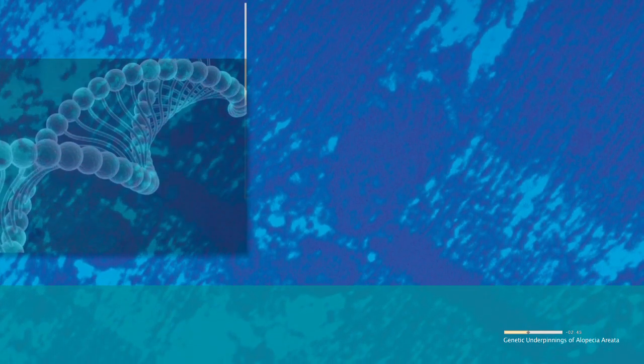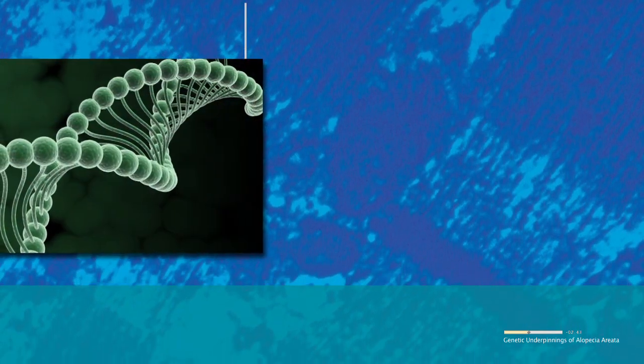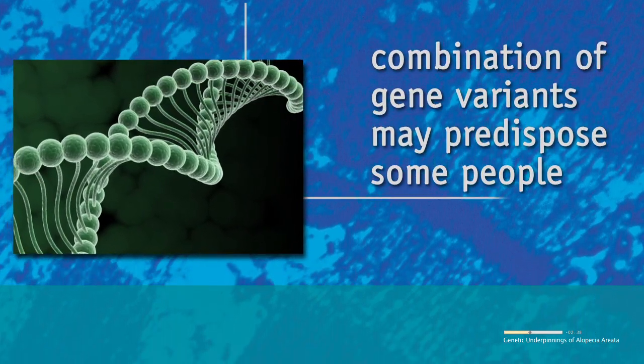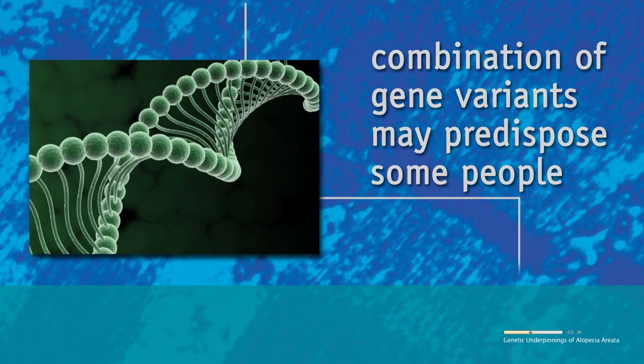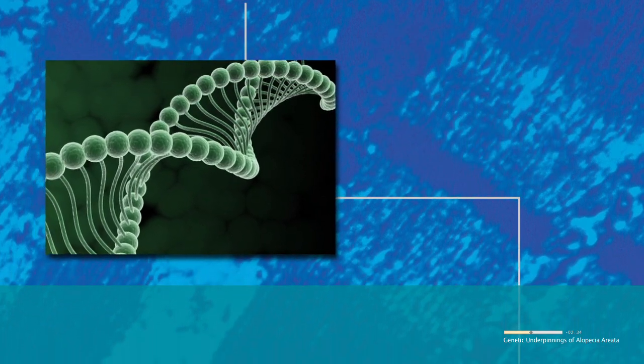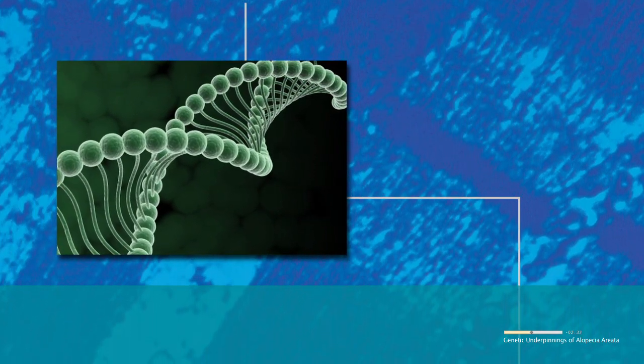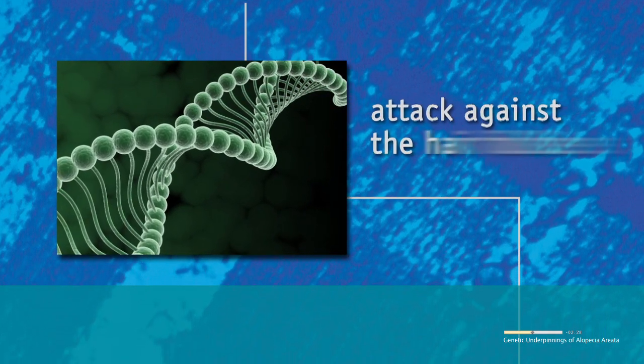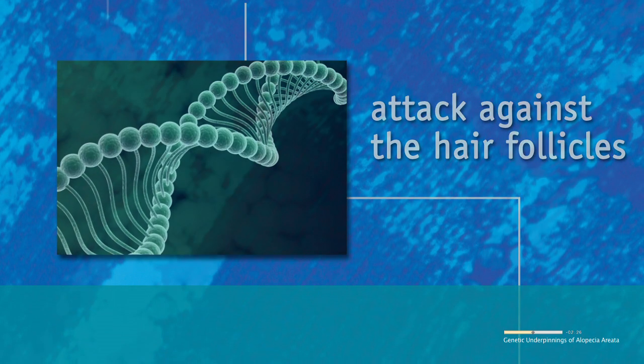Scientists do not know exactly why the hair follicles undergo these changes, but they suspect that a combination of gene variants may predispose some people to the disease. In these people, some type of trigger—perhaps a microbe, pathogen, or something in the person's environment—brings on the attack against the hair follicles.